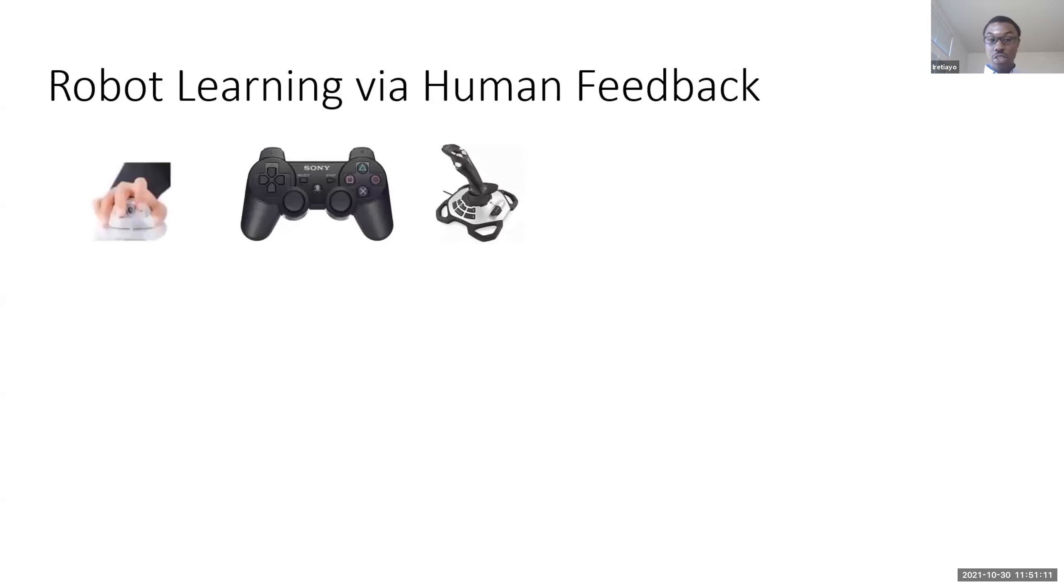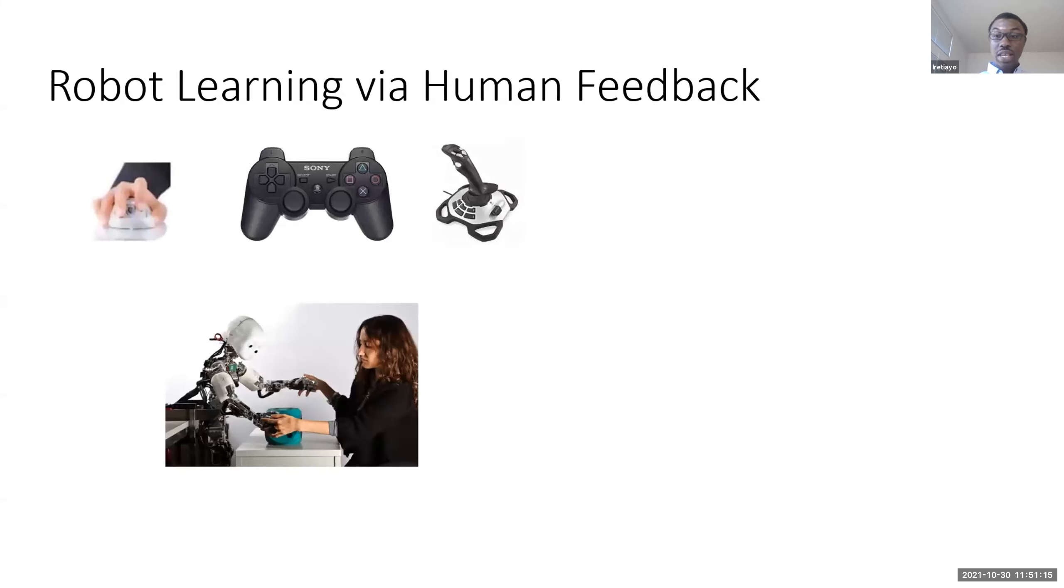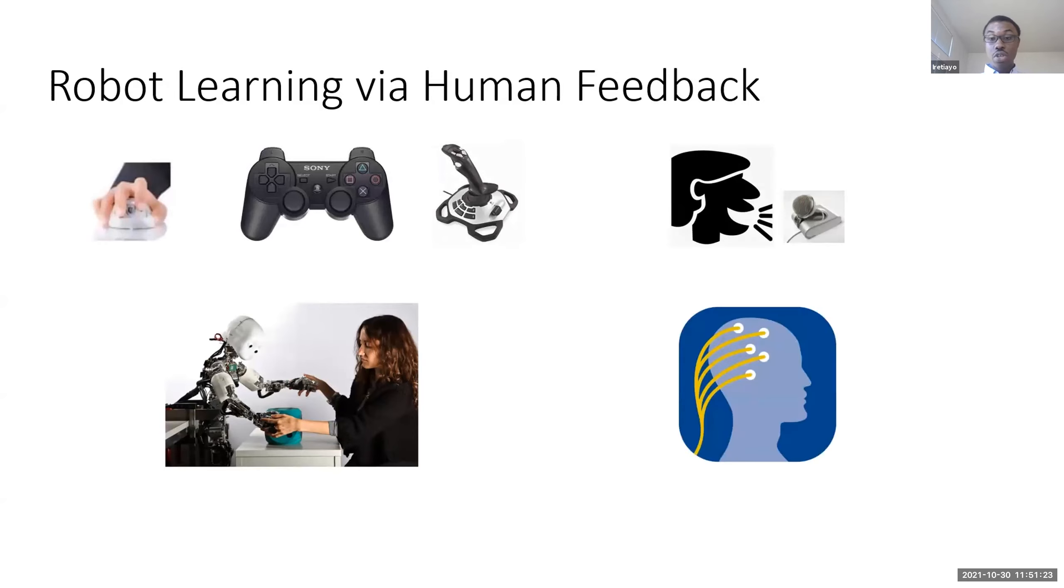There are a number of ways to provide such inputs to the robot. For example, you can have mouse clicks or joysticks to give inputs to the robot. A human can manually move the robot's body parts to provide an example of how to perform the task. You can send voice commands to the robot, or you can use brain computer interface to measure physiological signals from the humans, which is then passed to the robot.